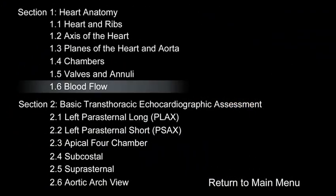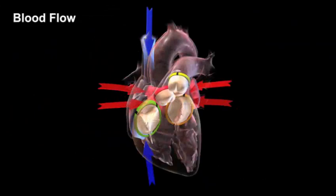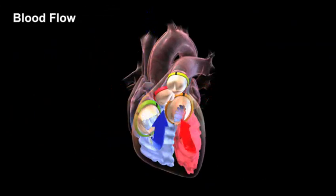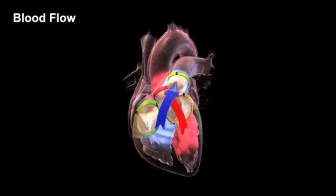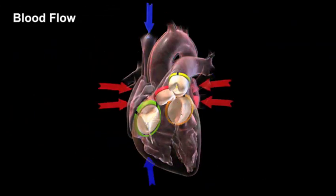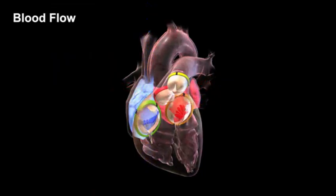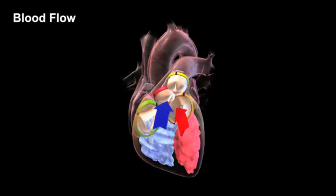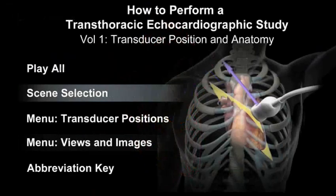The cardiac anatomy section visualizes relationships of the heart, ribs, axis of the heart, planes of the heart and aorta, chambers, valves and annuli, and blood flow through the heart.